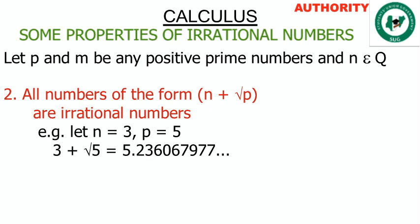Property two: all numbers of the form n plus root p are irrational numbers. For instance, let n equal 3 and p equal 5, giving us 3 plus root 5 which equals 5.23606797... continuously. It is non-terminating and non-repeating in blocks, making it an irrational number.